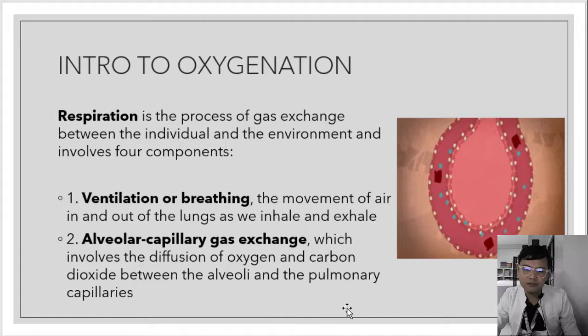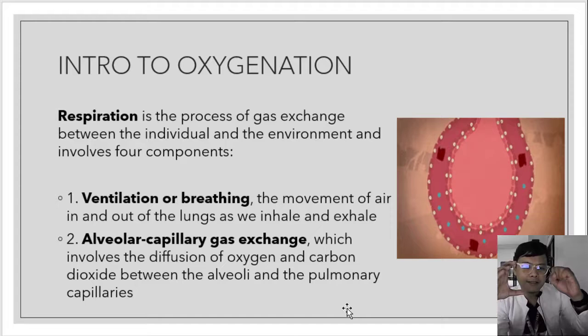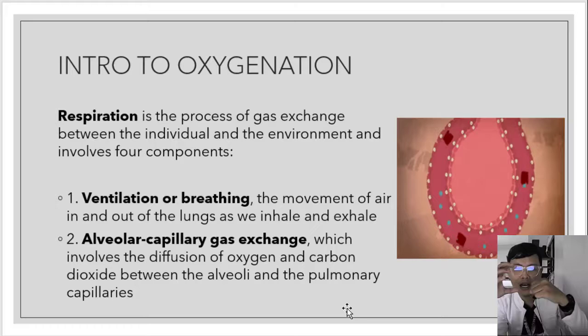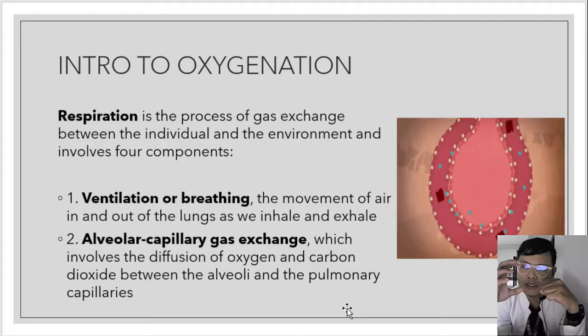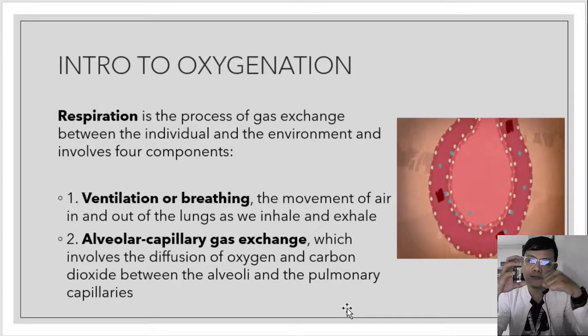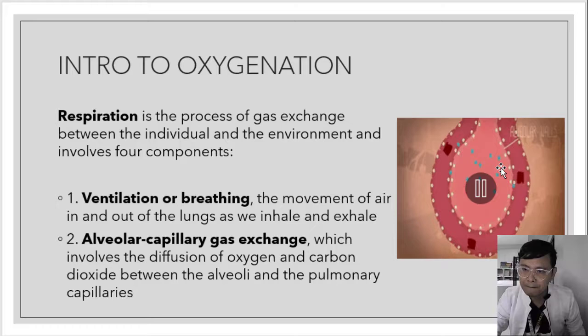This process involves diffusion of oxygen and carbon dioxide between the alveoli and the pulmonary capillaries. The alveoli have a higher concentration of oxygen than the venous blood. Through diffusion — movement from higher to lower concentration — when the venous blood contacts the alveoli, oxygen moves from the alveoli into the venous blood. That is the process of diffusion, where the RBC picks up oxygen.